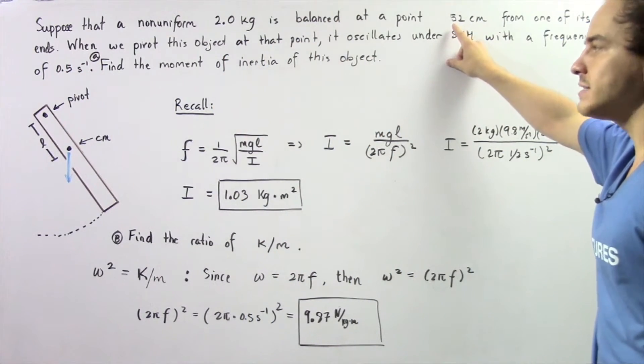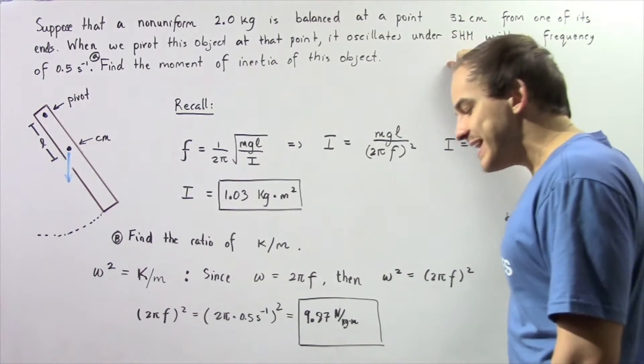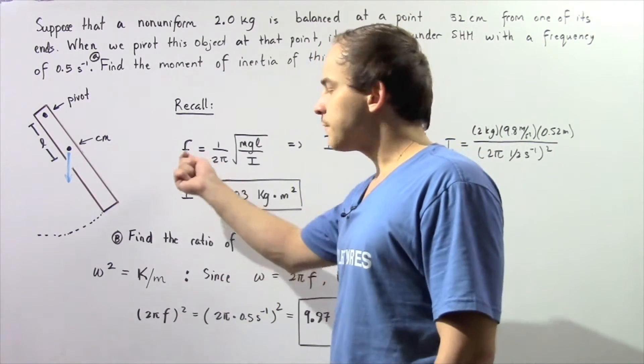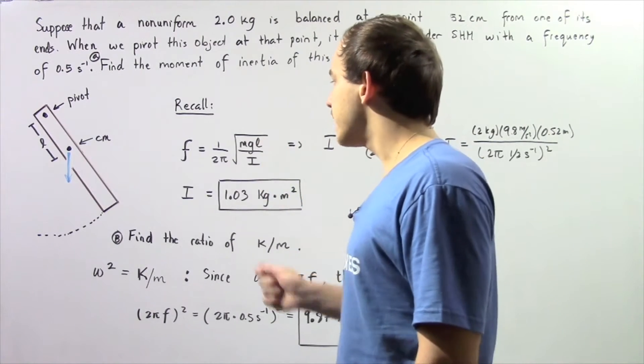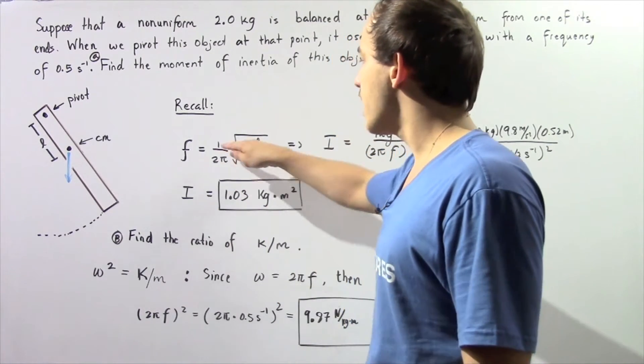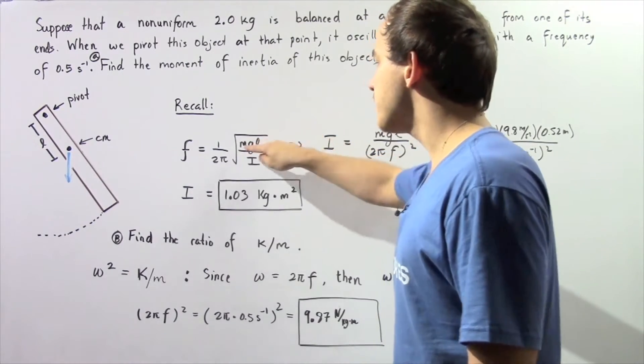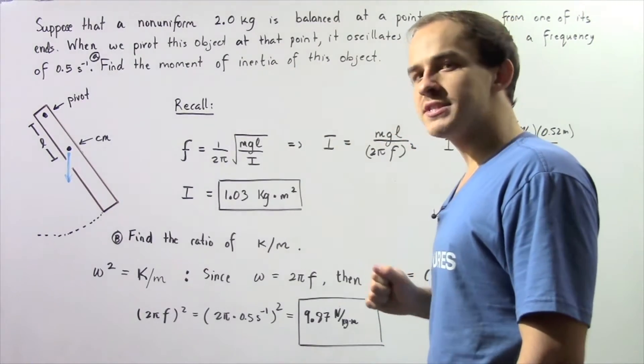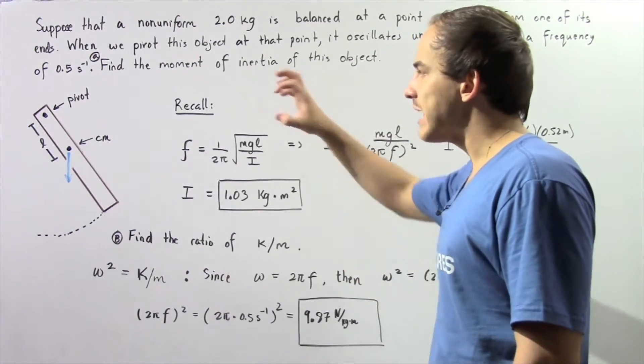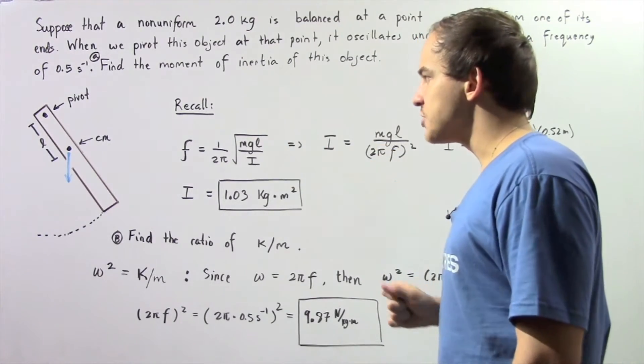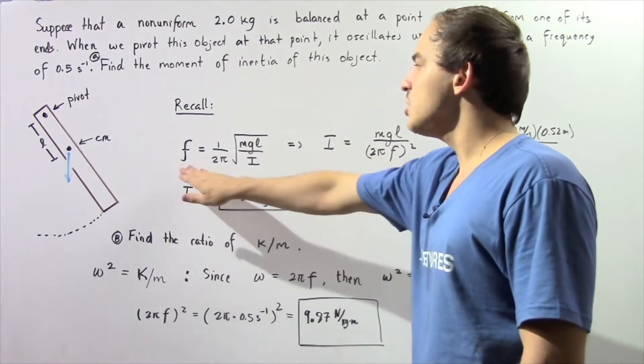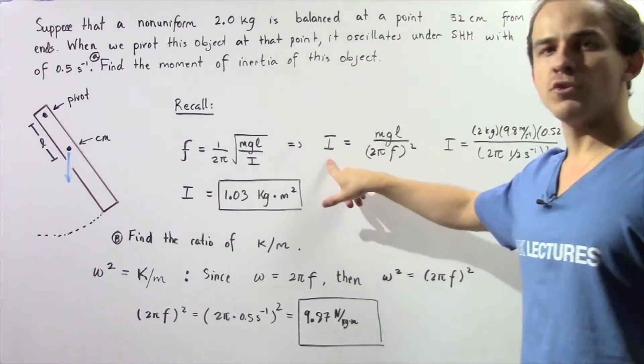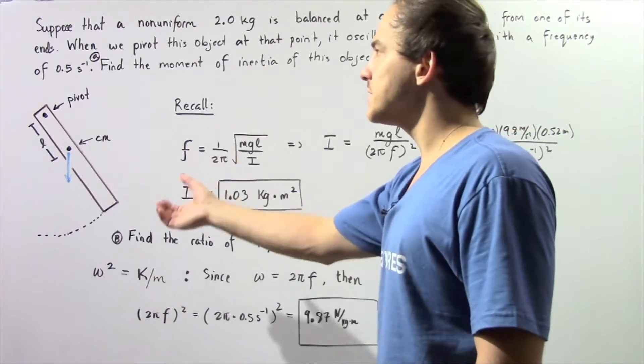Recall the relationship between our moment of inertia and the frequency of the object. The frequency is equal to 1 divided by 2π multiplied by the square root of mgl divided by I, where I is our moment of inertia, m is our mass, g is our gravitational constant, and l is our lever arm. We know the lever arm, the mass, and the frequency, so we can rearrange our equation and solve for the moment of inertia of our physical pendulum.